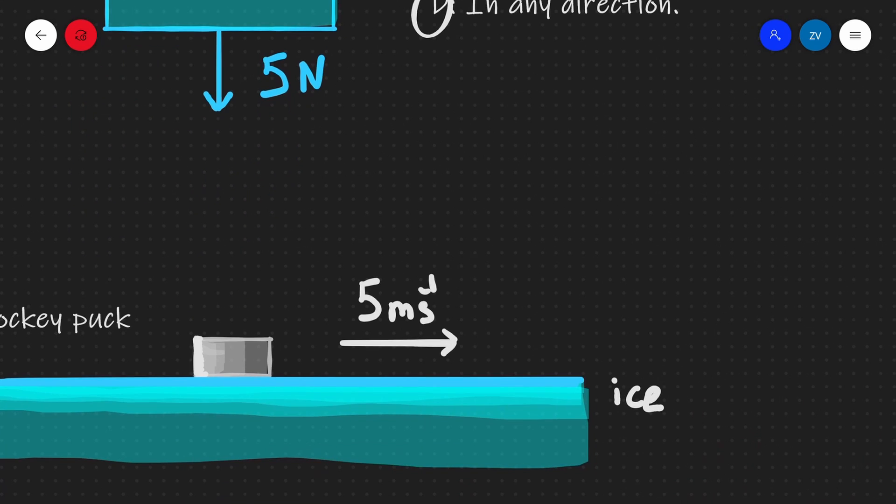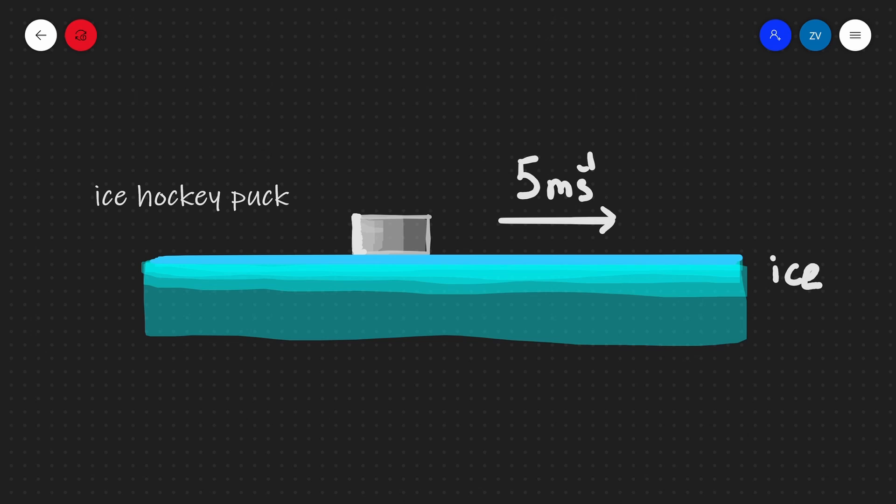In order to address this, let's imagine an ice hockey puck, which has been hit by an ice hockey stick at a speed of, let's say, 5 meters per second.